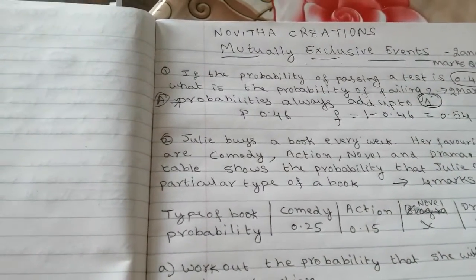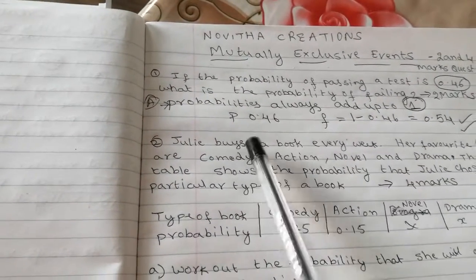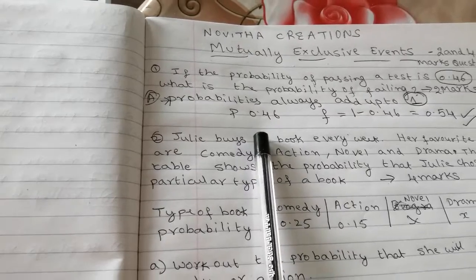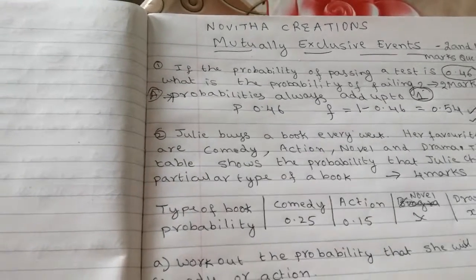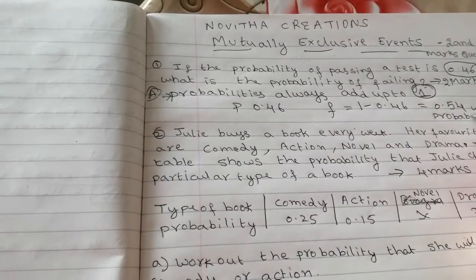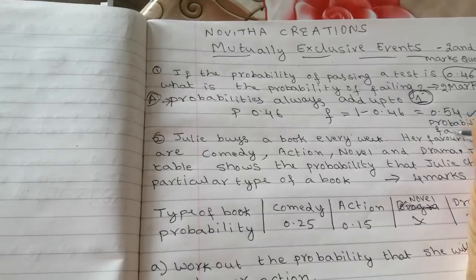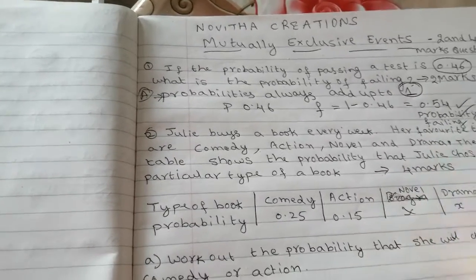This is the way we will solve this type of questions in GCSE maths. So the probability of failing is 0.54. Next question.